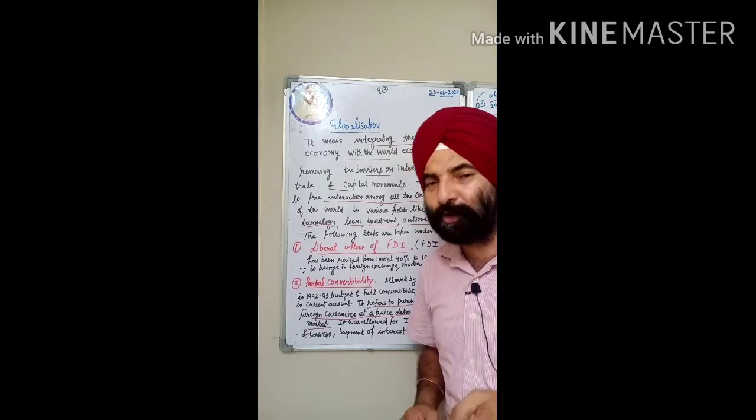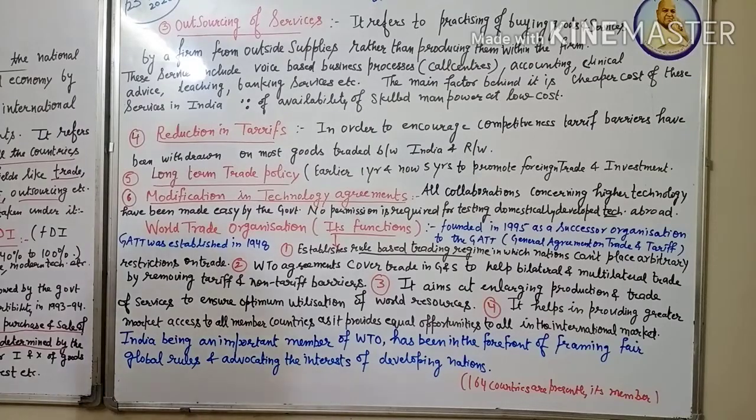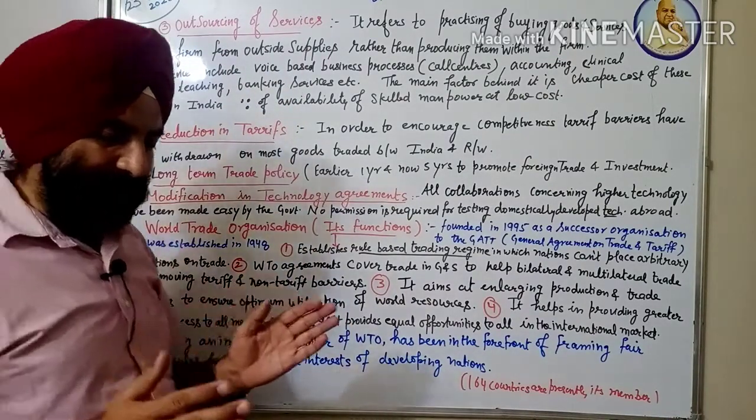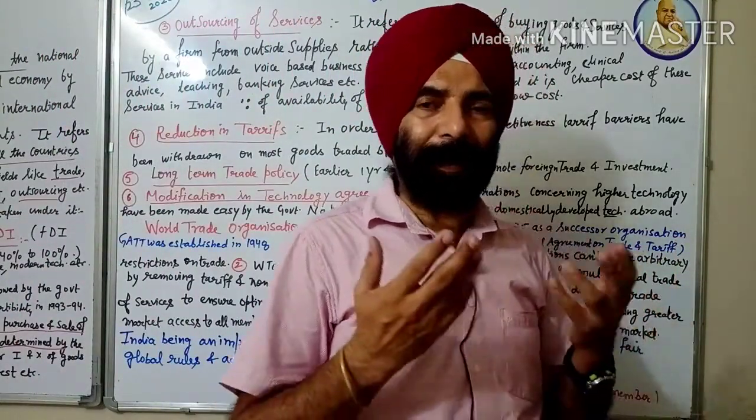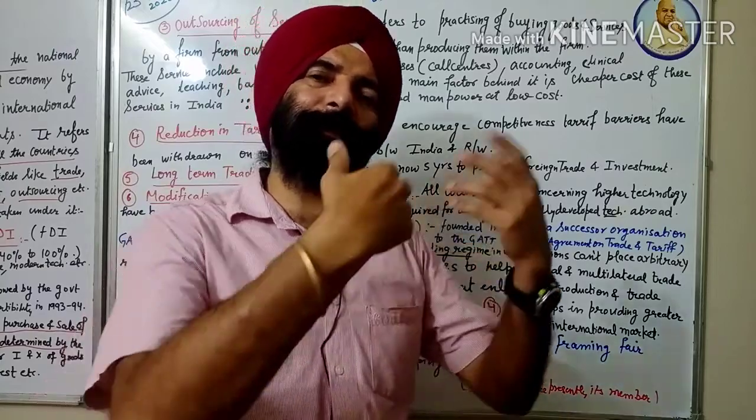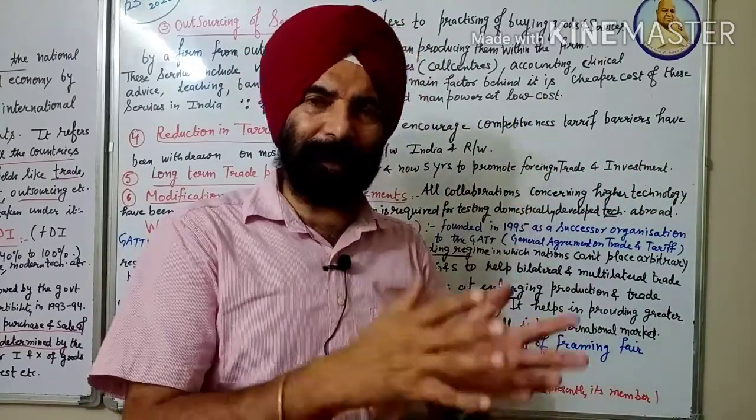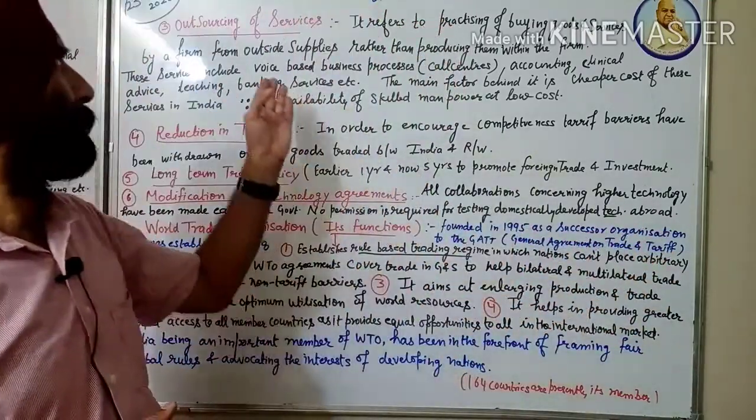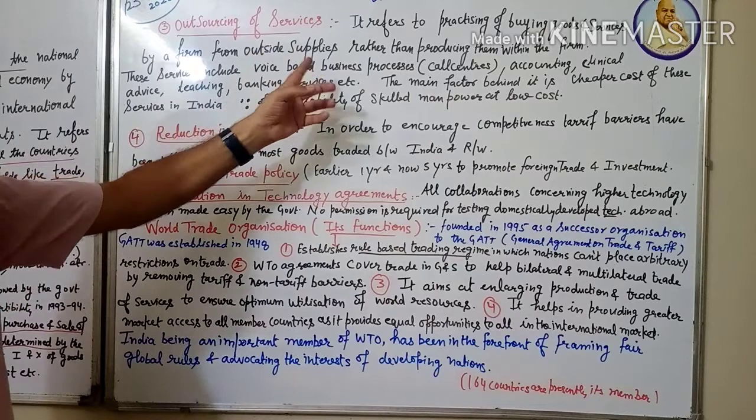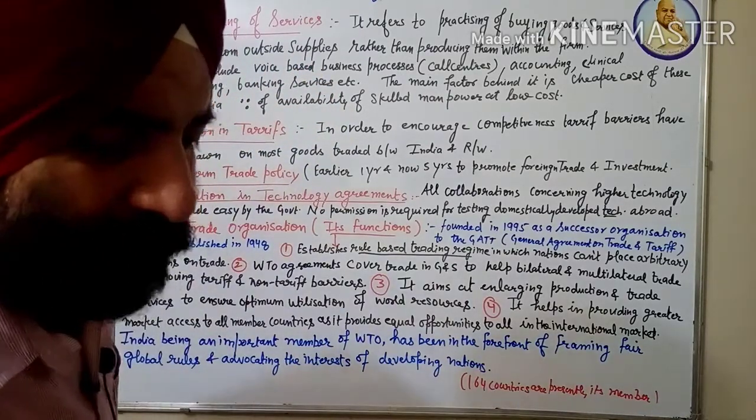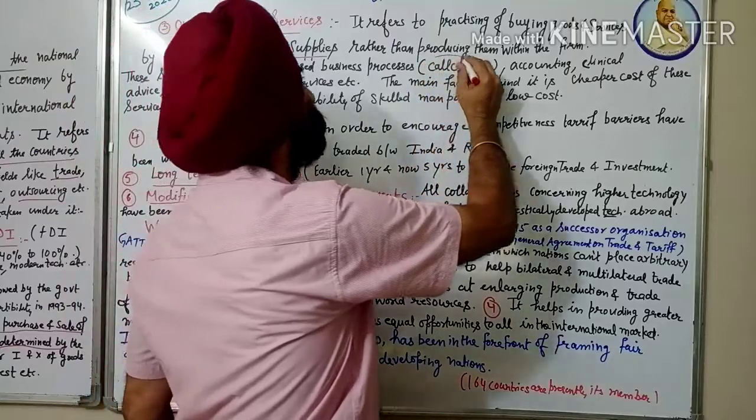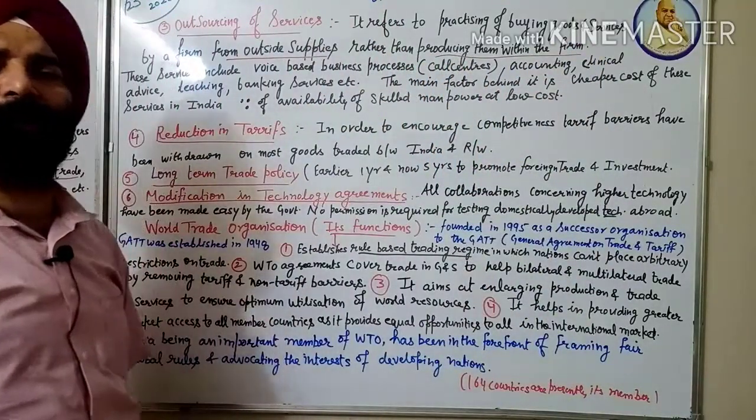Third reform was outsourcing of services. What is outsourcing? Those services which a company feels are very costly if provided within the company, they use to take the services from other firms. It reduces their cost and the firms can earn a good level of profit. It refers to the practice of buying goods and services by a firm from outside suppliers rather than producing them within the firm. This is called outsourcing of services.